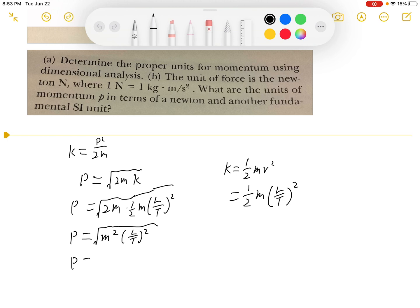This gives us P equals m times L over T, which means mass times length over time, which is kilogram times meter per second. This will be the answer for part a.